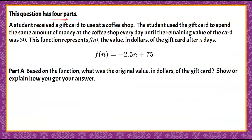We are given this question, which has four parts. A student received a gift card to use at a coffee shop. The student used the gift card to spend the same amount of money at the coffee shop every day until the remaining value of the card was $0. This function, f of n, is the value in dollars of the gift card after n days. We have this function f(n) = -2.5n + 75, where n is the number of days that the card is used and f(n) is the value on the gift card.